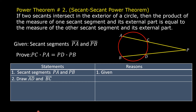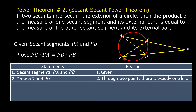Statement No. 2: Draw segment AD and segment BC. The reason is through two points, there is exactly one line. Through points A and D, there is exactly one line, and segment AD is a part of that line. Through points B and C, there is exactly one line, and segment BC is a part of that line.